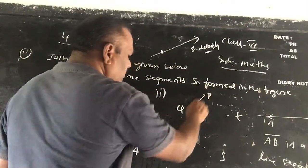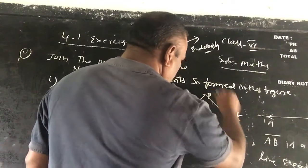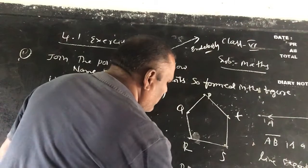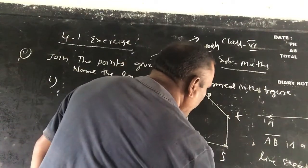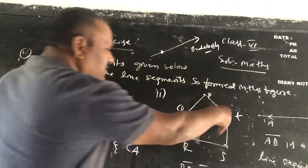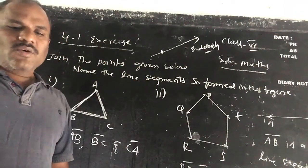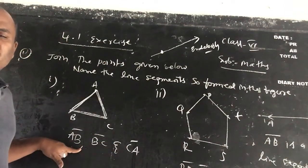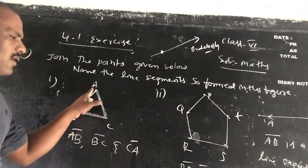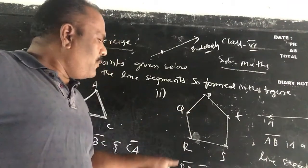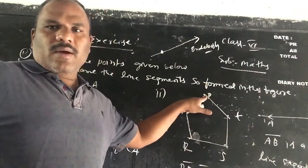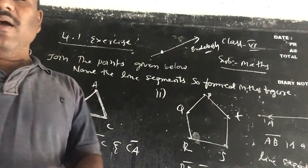And here also join in. In the next figure, the line segments formed are PQ, QR, RS, and TP. These are the line segments formed in the figure.